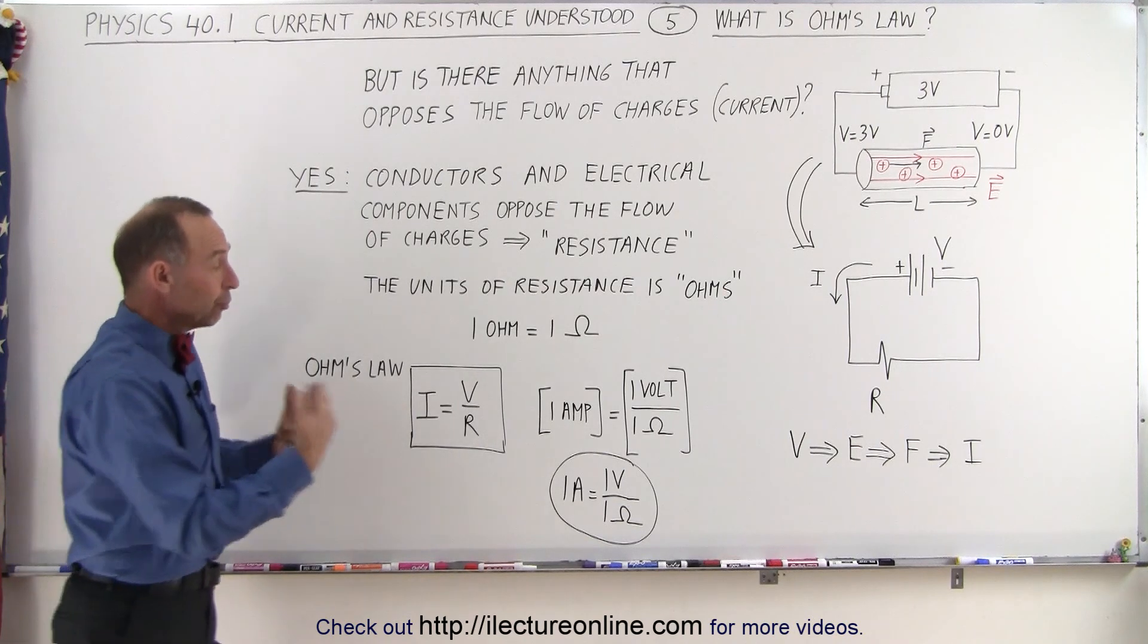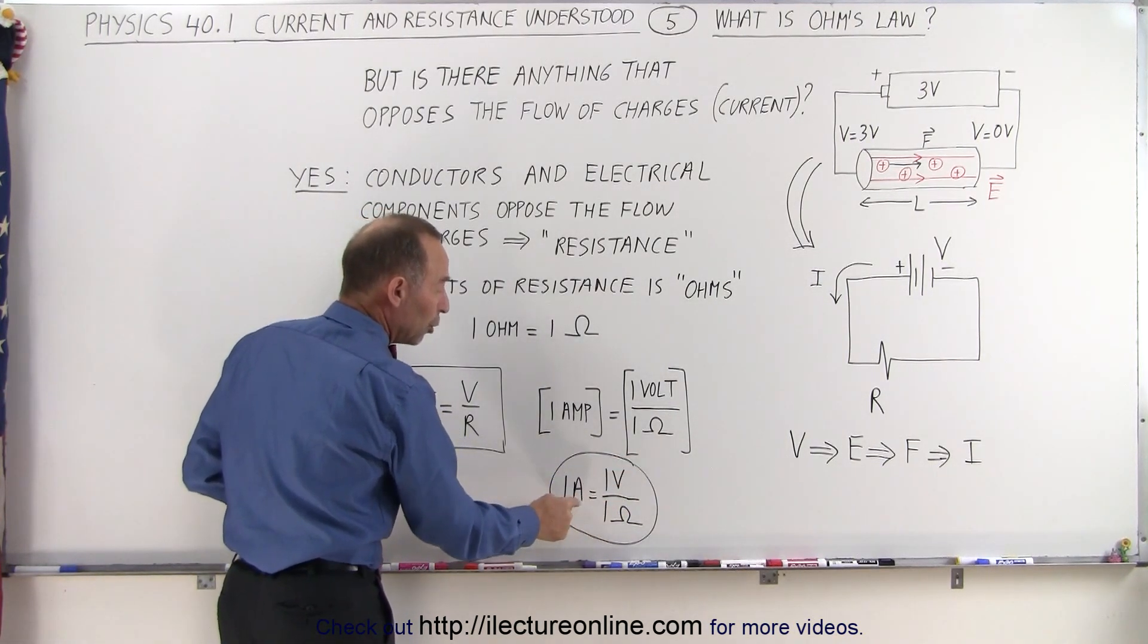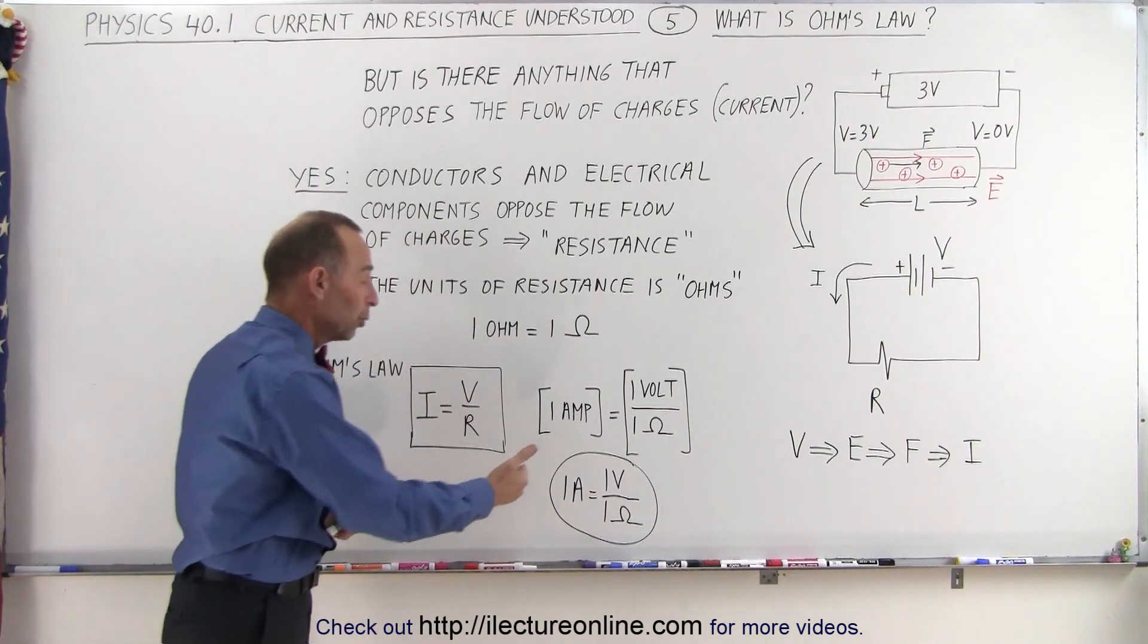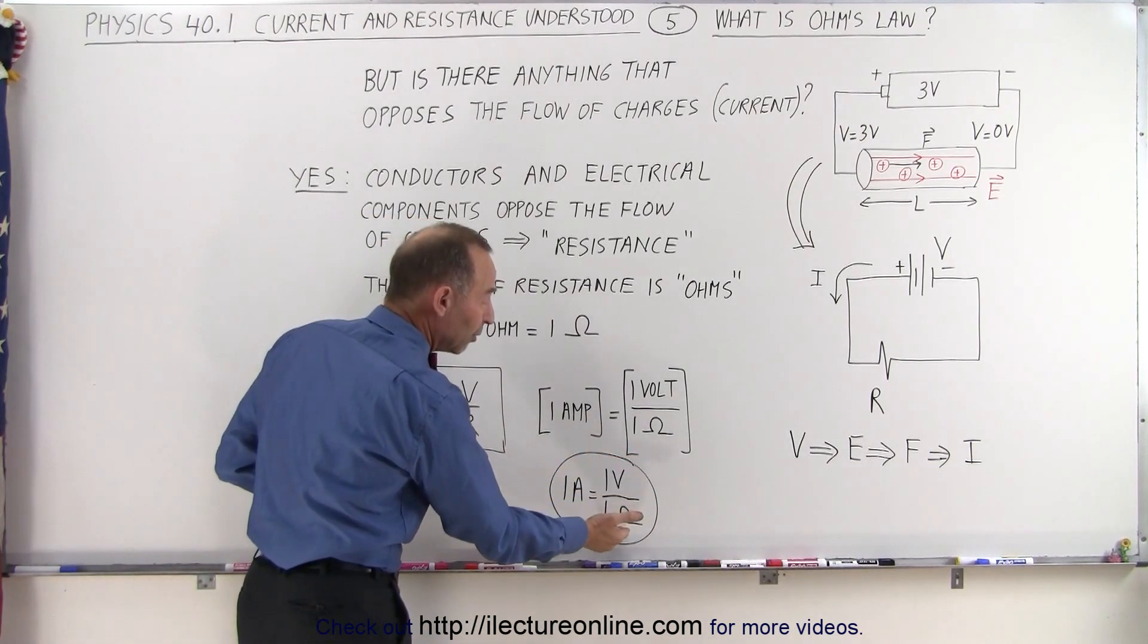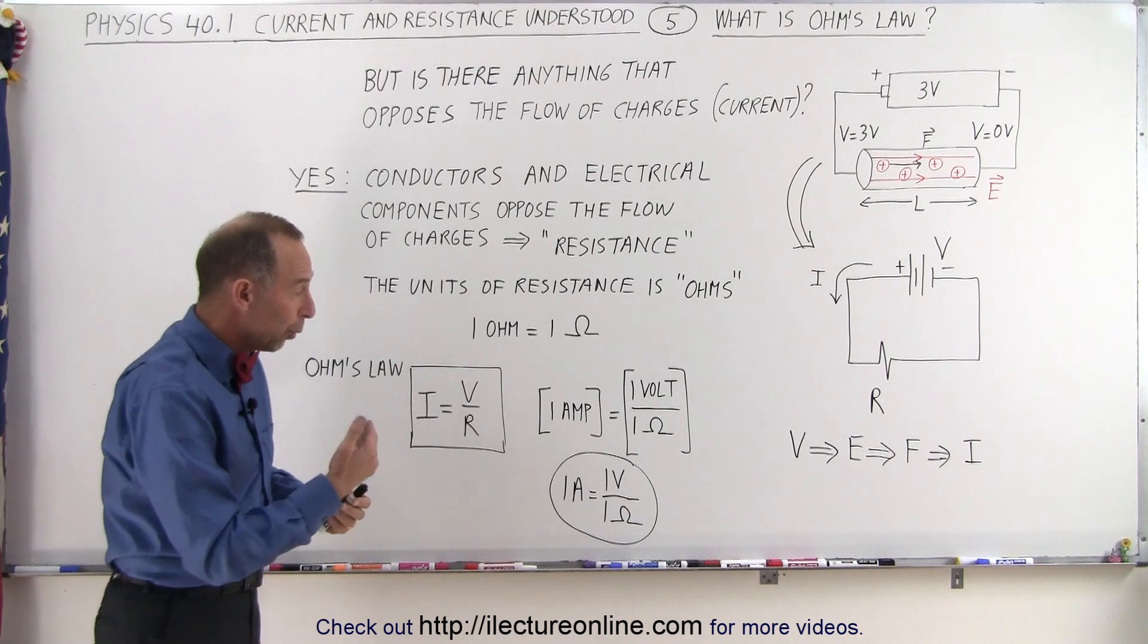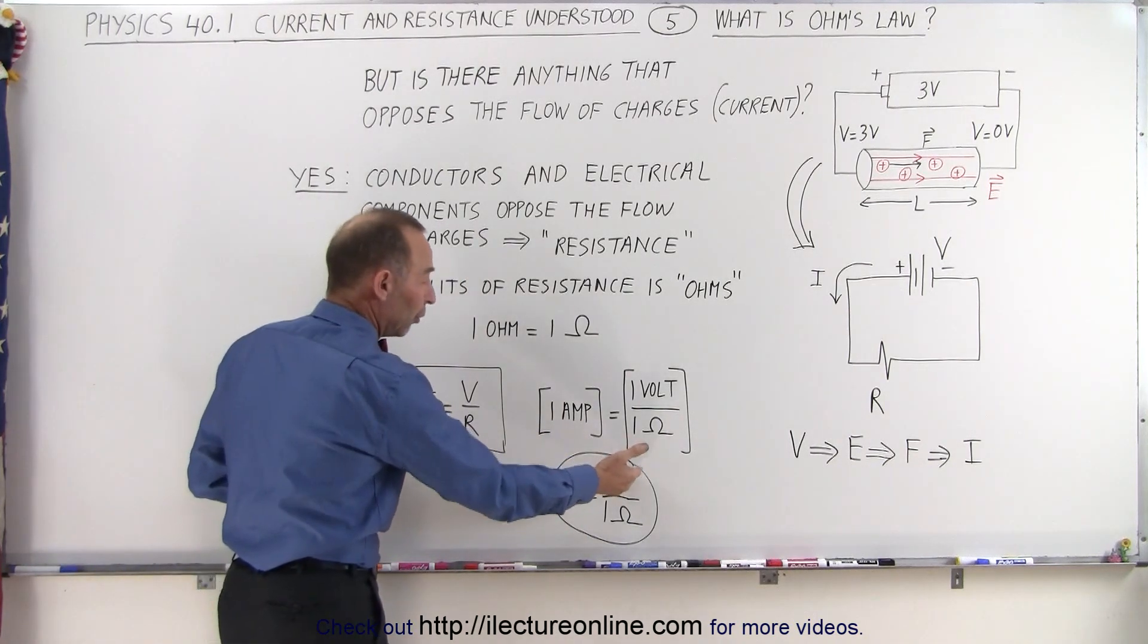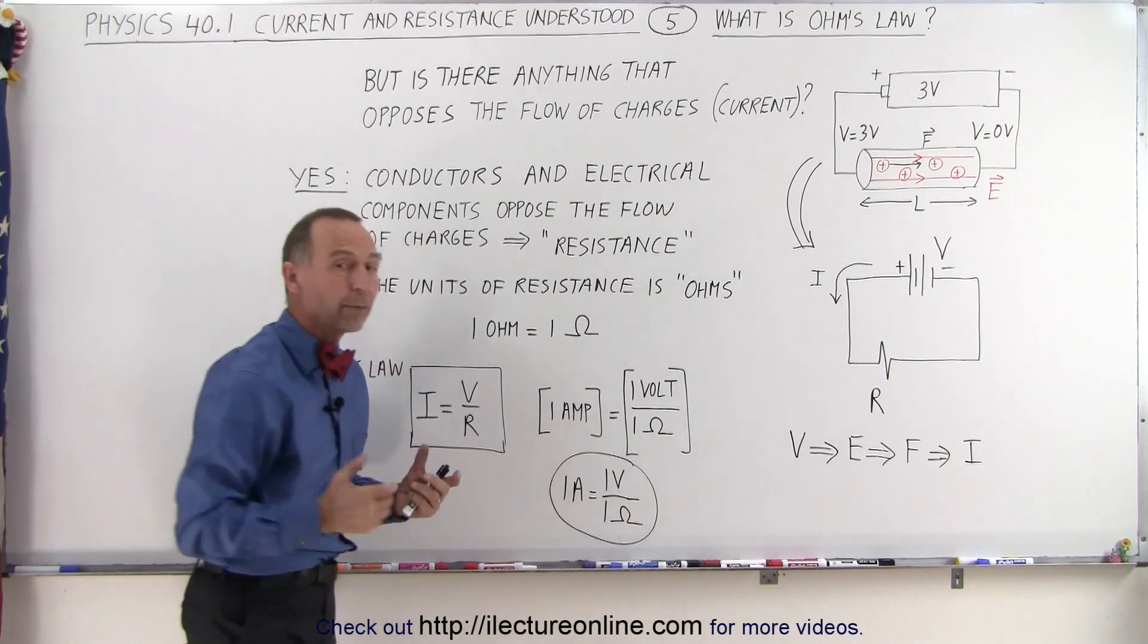Now if you increase the voltage, for example, if you change the voltage to two volts instead of one volt, you will increase the current. Doubling the voltage, you double the current—you now would have two amps of current. Or if you have one volt applied but you increase your resistance to two ohms, one divided by two is only a half amp. Increase the voltage, increase the current; increase the resistance, you decrease the current proportionally.